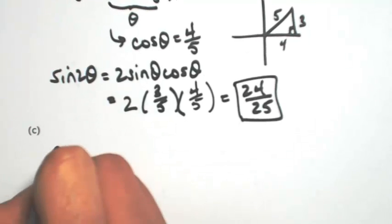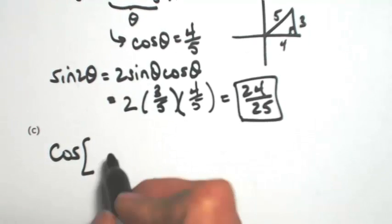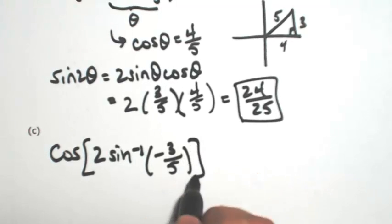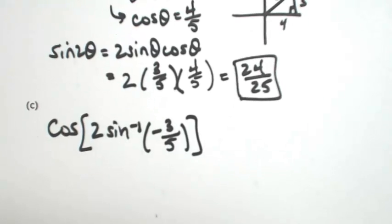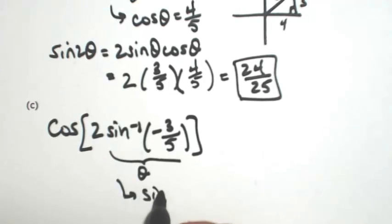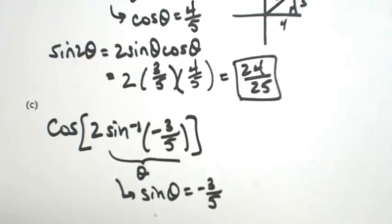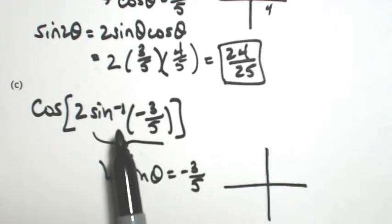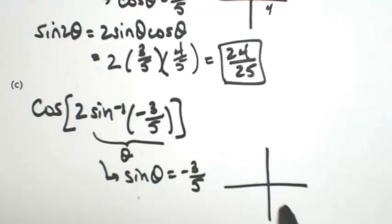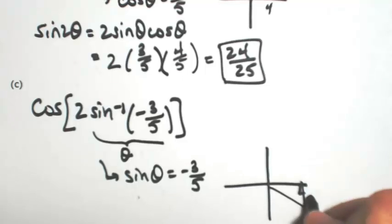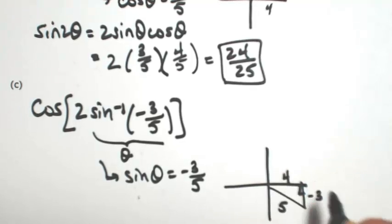One more — let's do a cosine. So the cosine of twice the inverse sine of negative 3 over 5. Again, remembering that inverses are just angles. So the inverse sine of negative 3 fifths is theta, which means that the sine of theta is negative 3 fifths. I'm going to draw the triangle in the right quadrant. Because we're talking about inverse sine, it can only be quadrants 1 and 4, so this negative means it's got to be quadrant 4. So opposite is negative 3, hypotenuse is 5, which makes the adjacent 4.